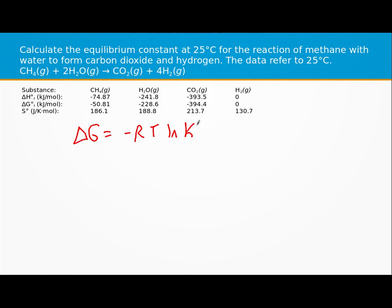We will need to get our delta G, and we can get it because we're right at 25 degrees Celsius, so we can use our numbers from our table.